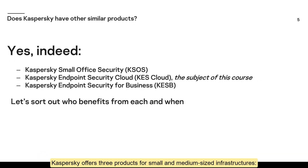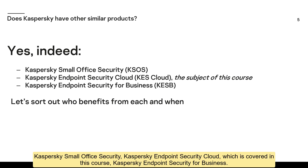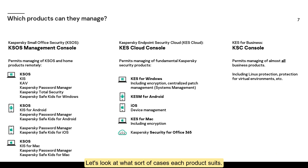Kaspersky offers three products for small and medium-sized infrastructures: Kaspersky Small Office Security, Kaspersky Endpoint Security Cloud — which is covered in this course — and Kaspersky Endpoint Security for Business. Let's look at what sort of cases each product suits.